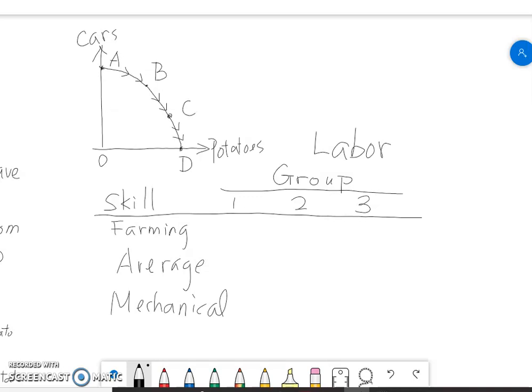In group number three are all of these talented mechanics, so they know the best way, the most efficient way, working in front of the machines or assembly lines. But they don't really like farming, they're not very good farmers. So group number three have very strong mechanic skills.